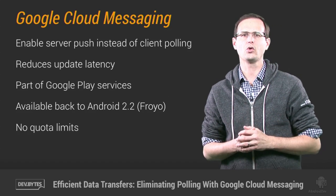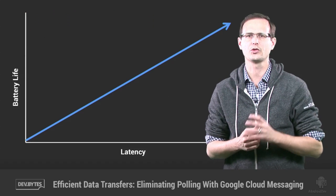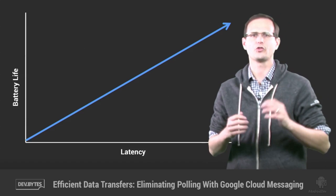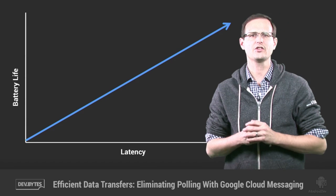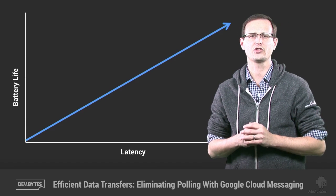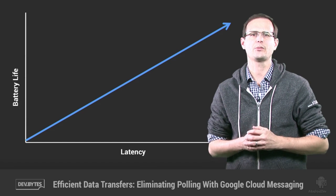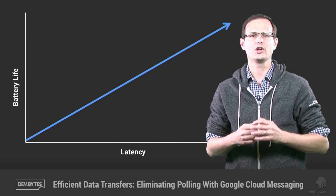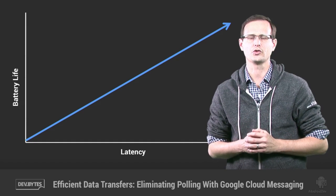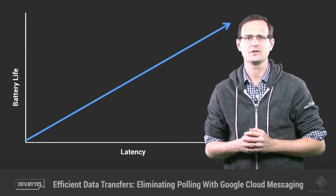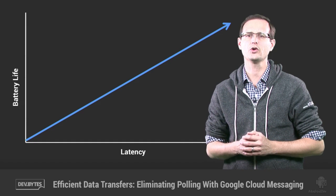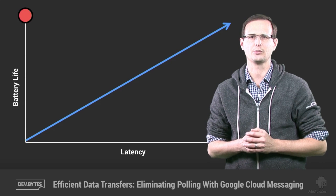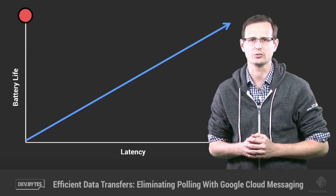If you're using polling, you're forced to balance data freshness with the resulting battery drain. The more often you poll for updates, the lower the latency between the data changing on the server and your app displaying those updates. But turning on the radio to check for those updates also drains the battery. That's the worst of both worlds when what you actually want is no latency and as little battery drain as possible.